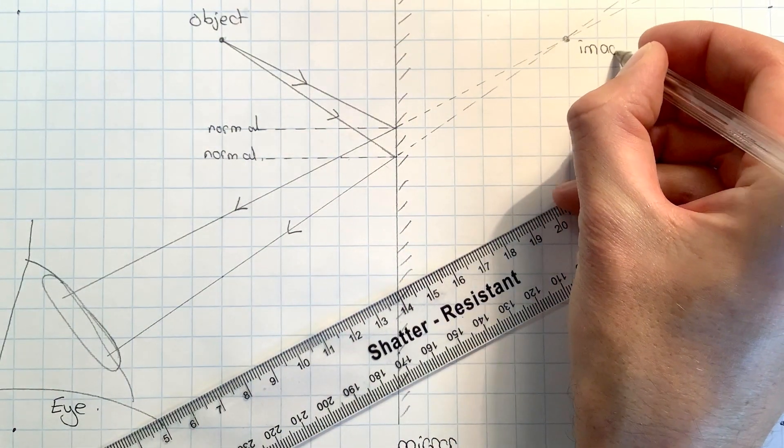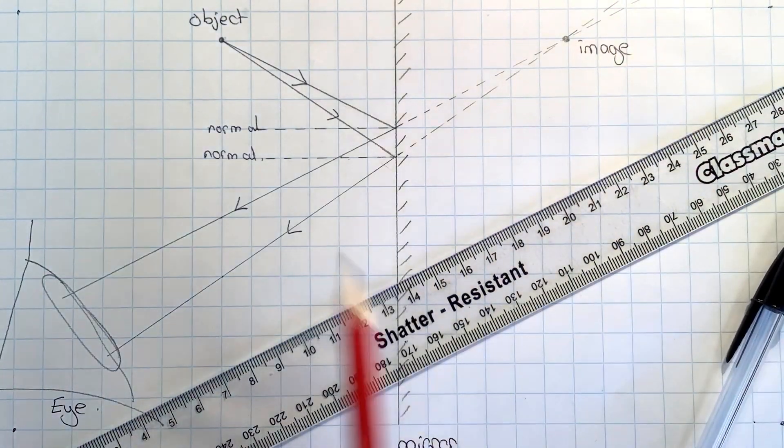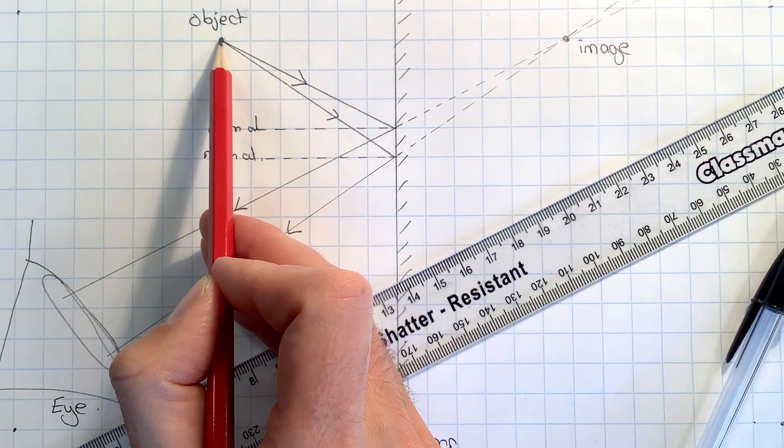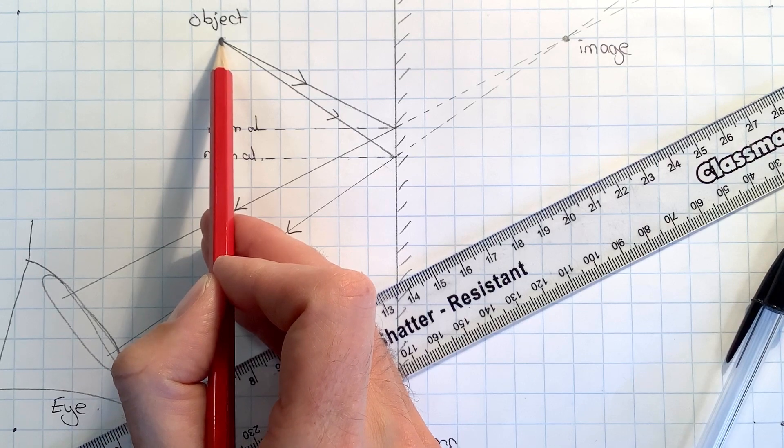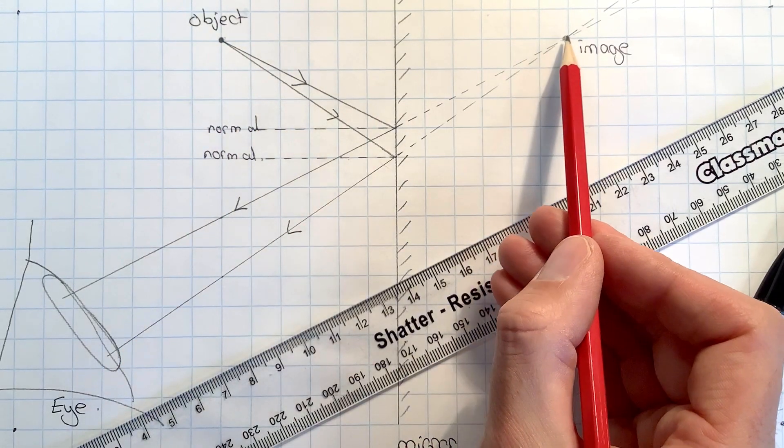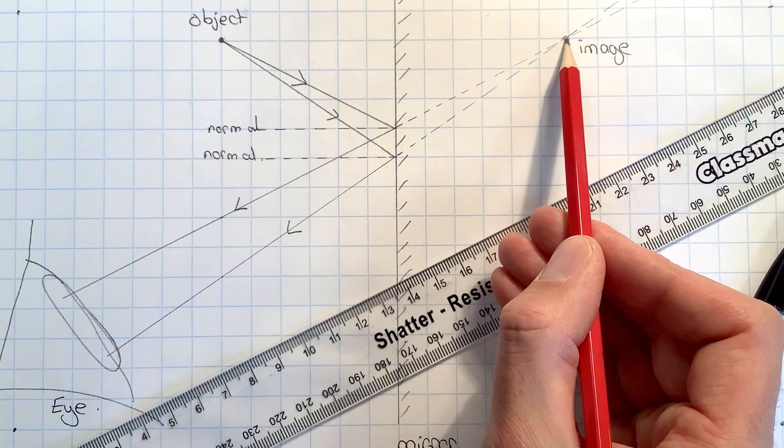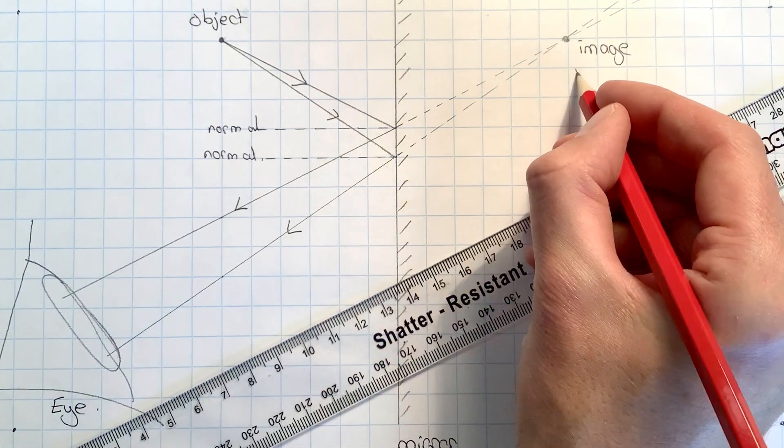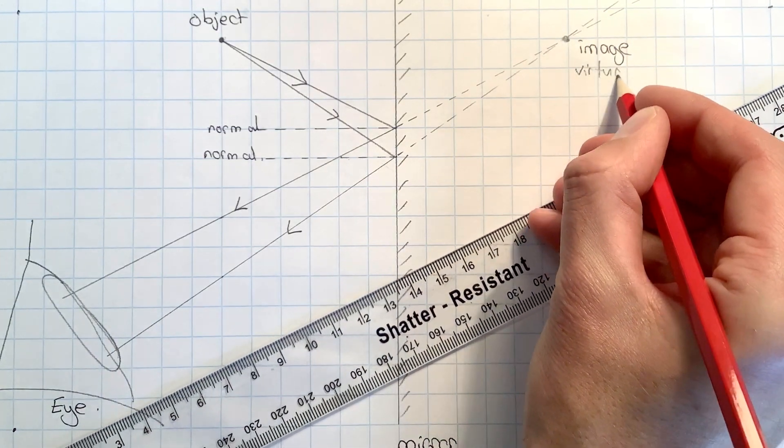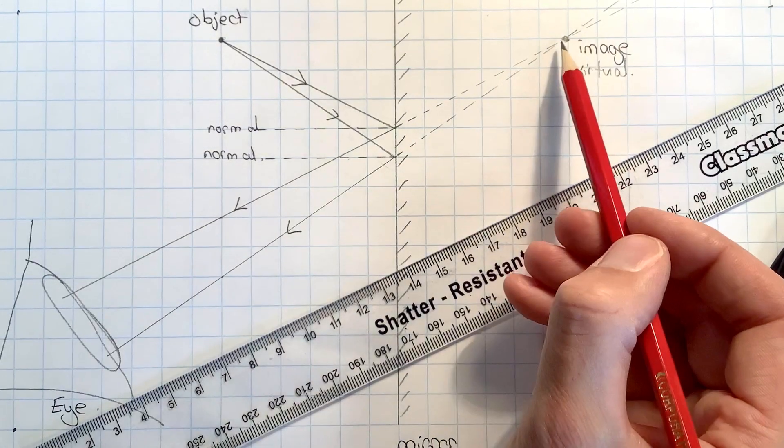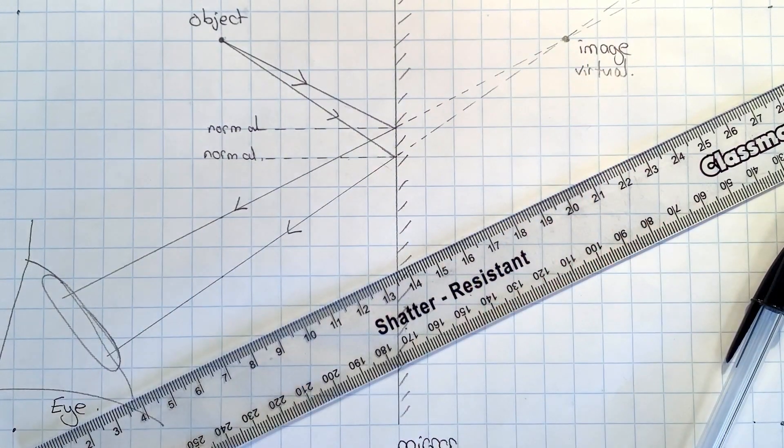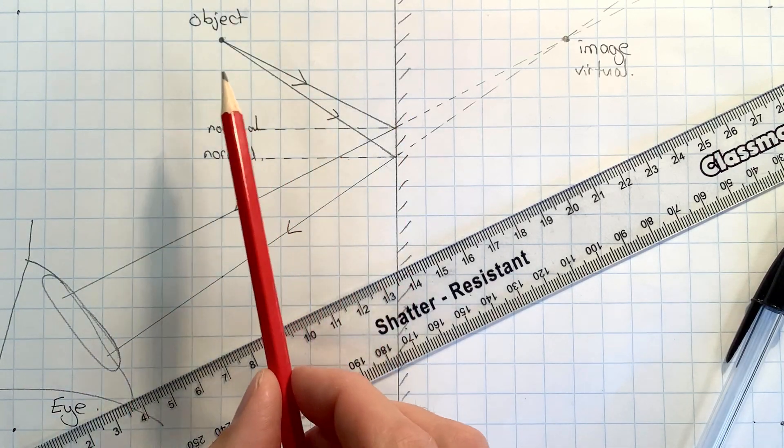The way we can understand that is that these rays, the real rays, actually came from the same point on our object, so our brain will infer that the image is here. That will get called a virtual image because it involved virtual rays crossing. Now to check that we've done this correctly, we can check that the image generally should form the same distance behind the plane mirror as the object was in front.